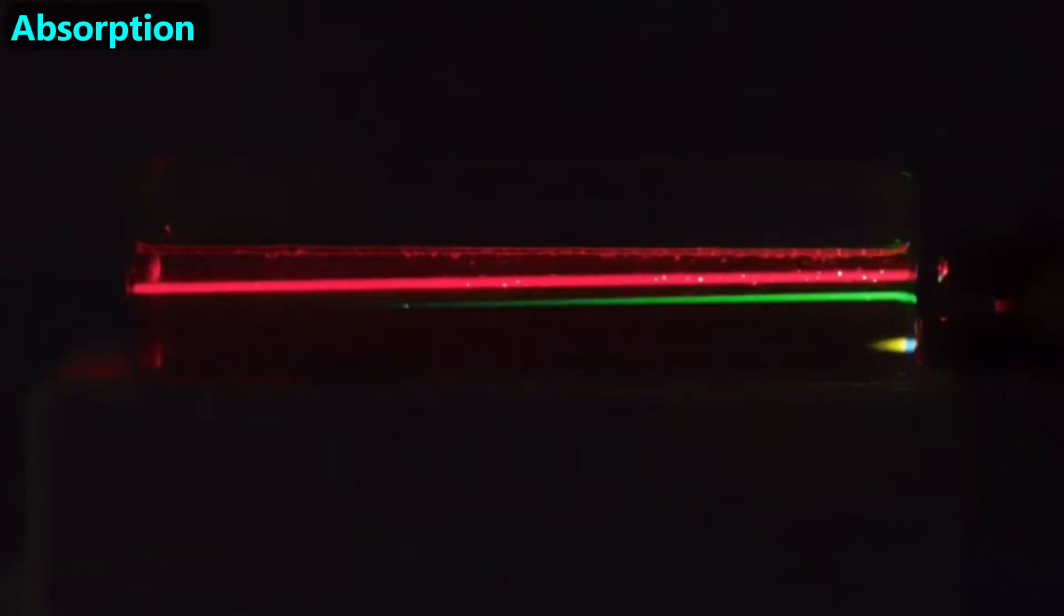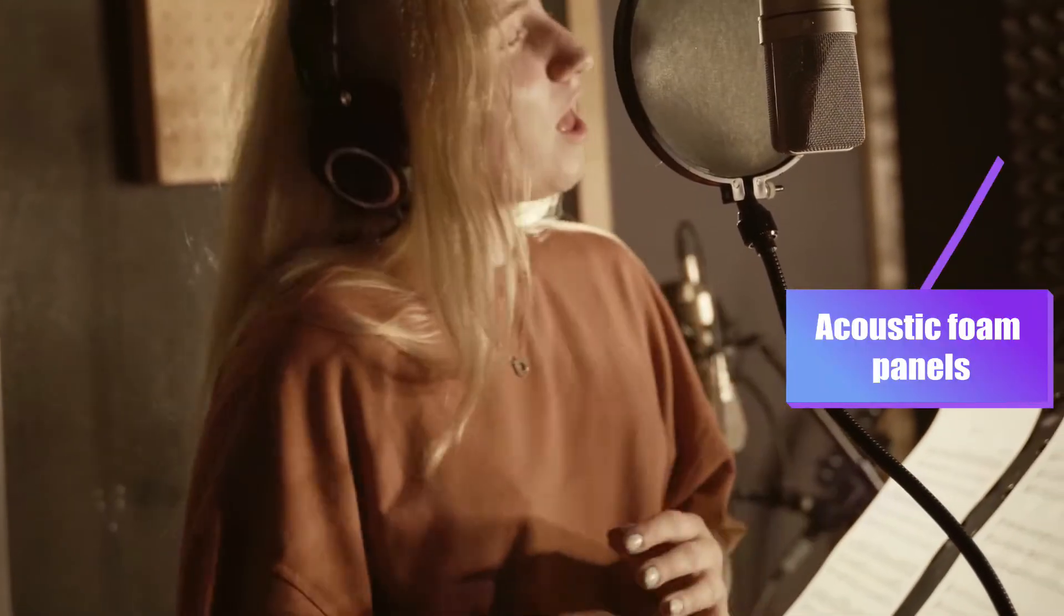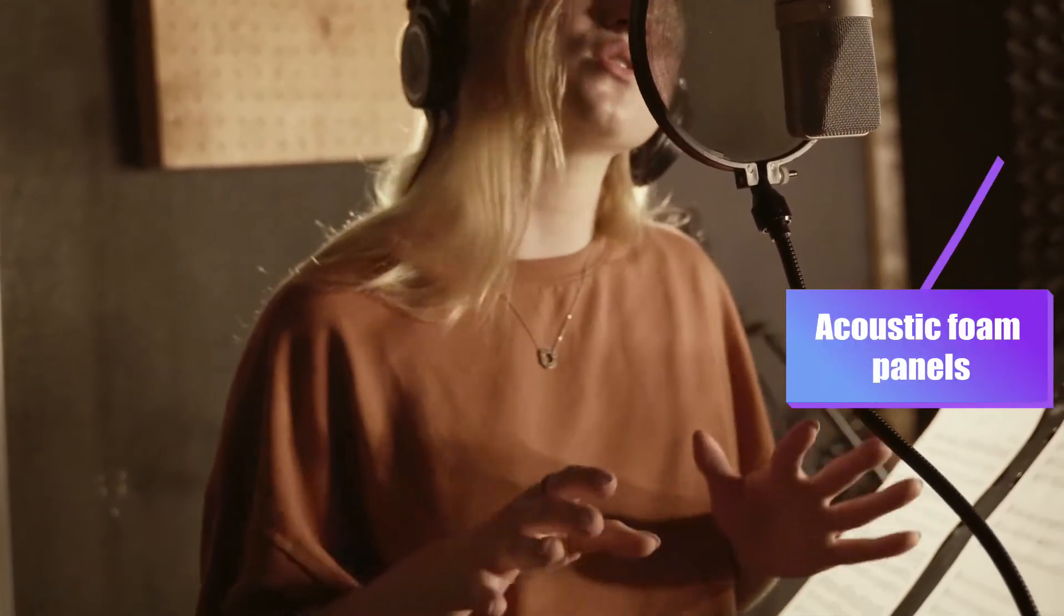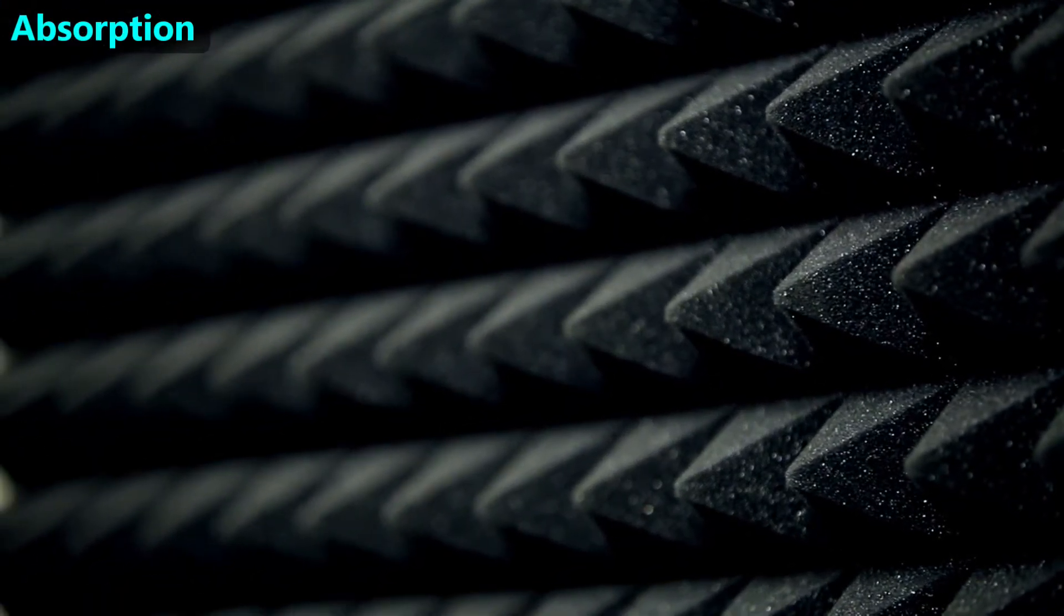Next, we'll introduce absorption. If you've ever been in a recording studio, you may have noticed acoustic foam panels on the walls. These panels absorb sound waves, so prevent echoes.